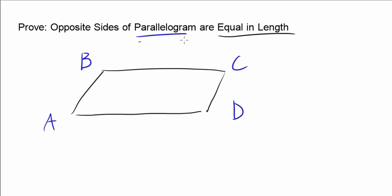By definition, a parallelogram has opposite sides that are parallel. So these two sides are parallel, and these two sides are parallel. We want to show that the lengths of AB and CD are the same, and that the lengths of BC and AD are the same.